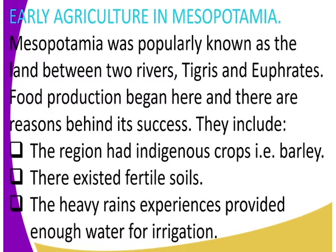Food production began here in Mesopotamia. One reason is that the region had indigenous crops, for example barley. There also existed fertile soils. Mesopotamia was popularly known as the land between the two rivers — River Tigris and River Euphrates.